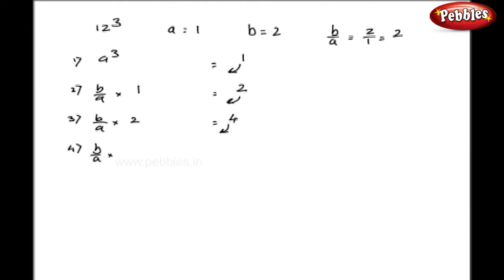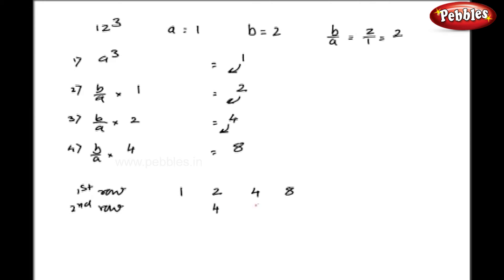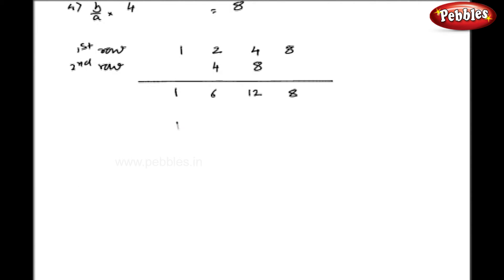As the fourth step, I do b upon a into the previous figure, that is 4, so the answer is 8. My first row will be 1, 2, 4, and 8. The second row is doubling the middle figures, giving 4 and 8. I will simply add them: 8, 12, 6, and 1.